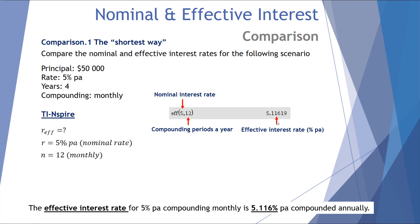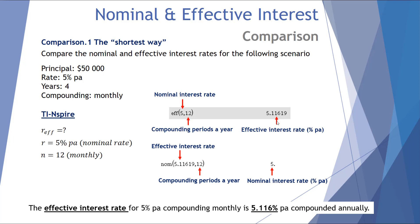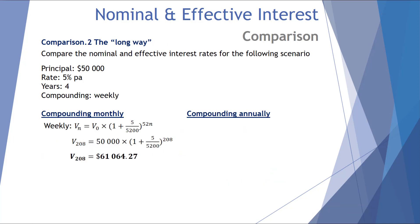The calculator also has the reverse feature, where it can calculate the nominal interest rate if you enter in the effective interest rate and the number of compounding periods per year. We use NOM as the formula for nominal — it will convert the effective interest rate back into the nominal interest rate. Let's now look at example two using the three different techniques.